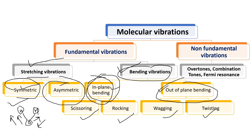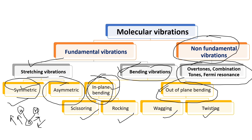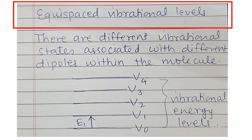In this particular video, I am mainly focusing on the non-fundamental vibrations — overtones, combination tones or combination bands, and Fermi resonance. As I have told you earlier, these are the various vibrational energy levels starting from V0 to V4. In between the electronic transition levels, we have different vibrational energy levels, and in between vibrational energy levels, we have rotational energy levels.